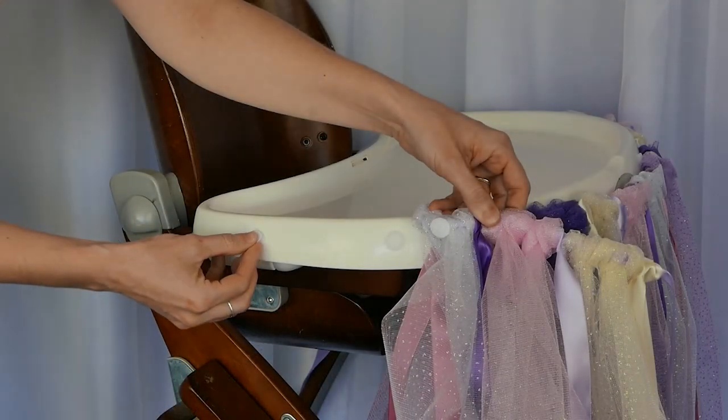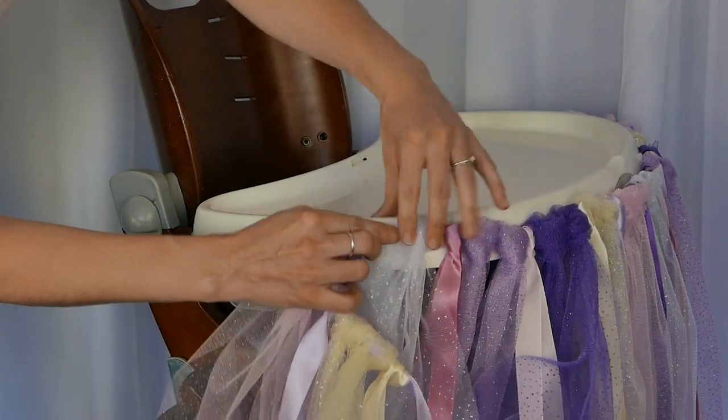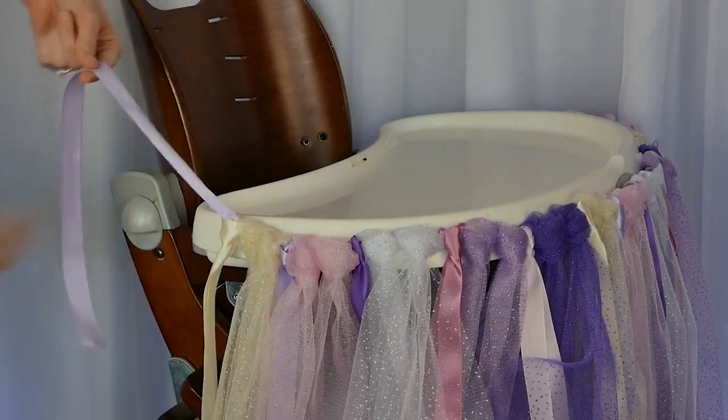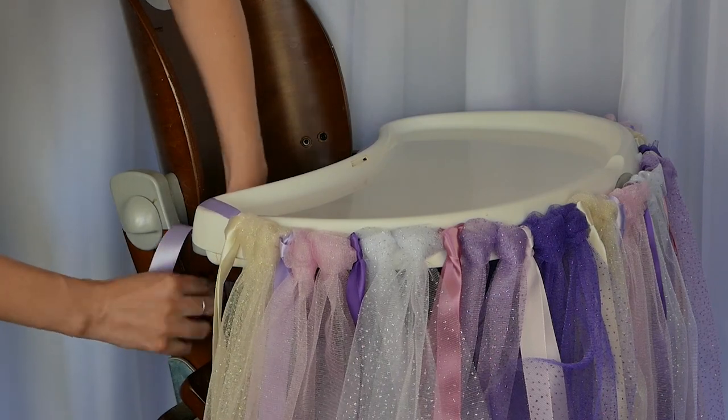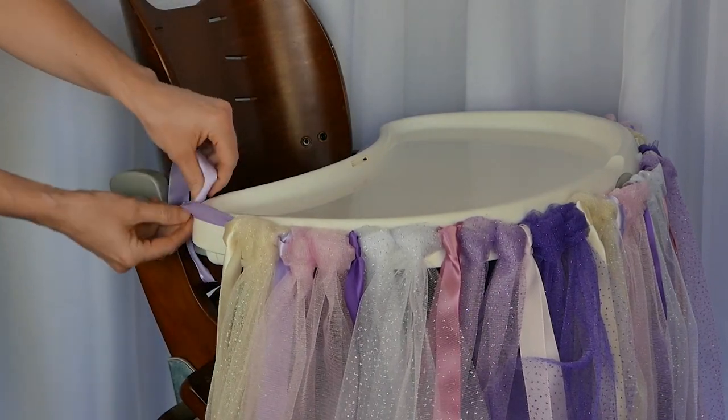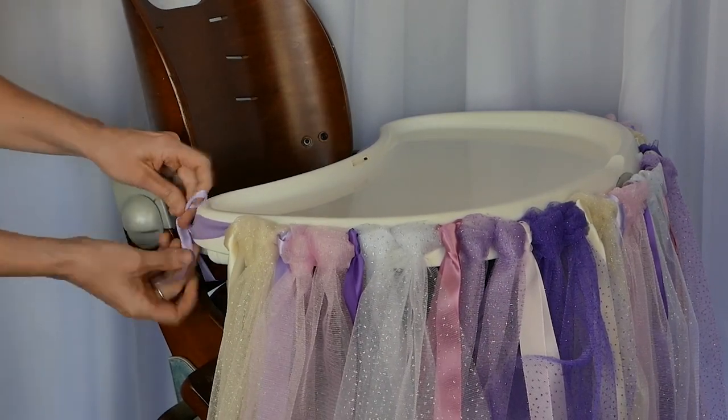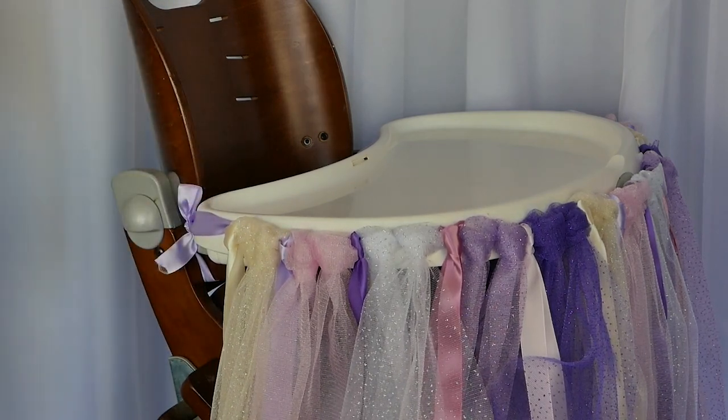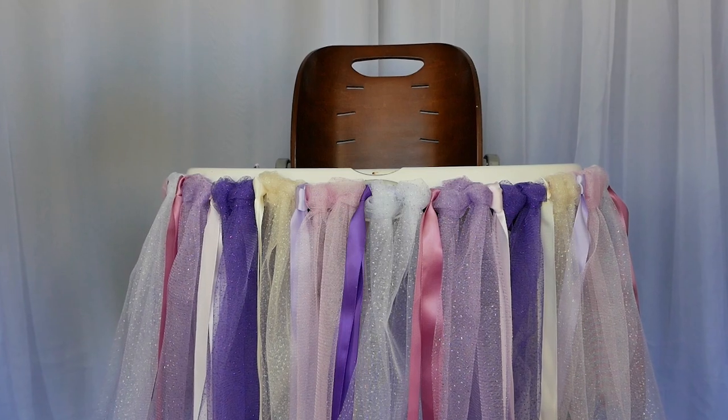The reason why we did this, we wanted the tutu not to sag. So we wanted that really clean line. And if anybody pulls at it, it's a much harder pull there. So at the end, like I mentioned in the very beginning of the video, you want to have that extra ribbon so you can tie it at the very back of the tray here as we did. So there you go. There is the first part of our look here.